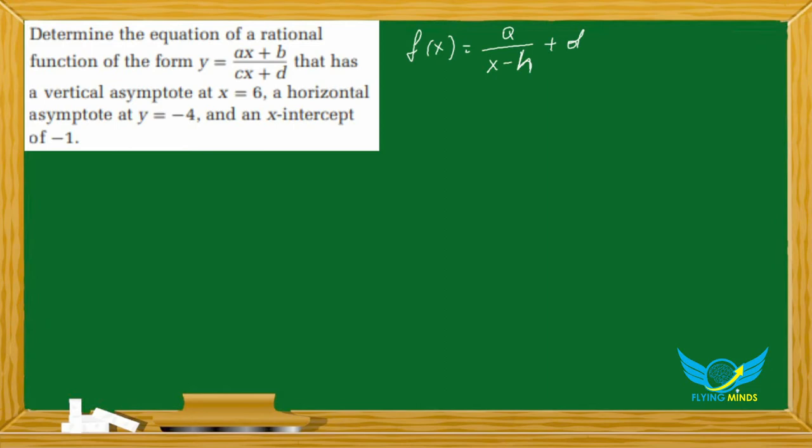We need to bring what we're given to this form, but before we do it we can figure out the denominator. Because we know that the vertical asymptote is x equals 6, in the denominator we must have the expression x minus 6, because it's not equal to 0.